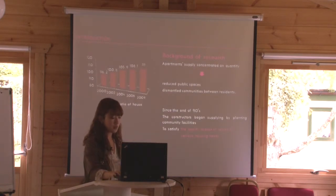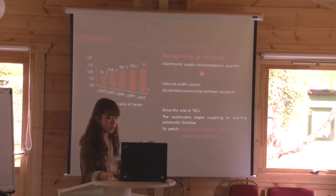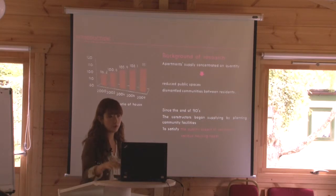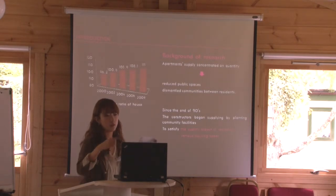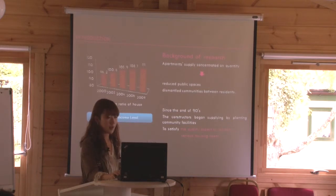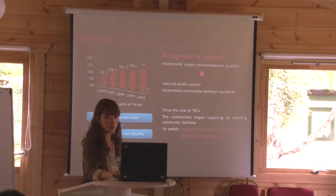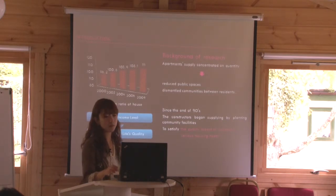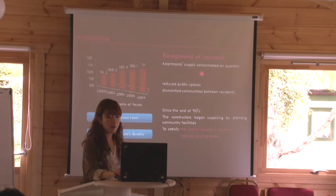As you can see, this graph shows the diffusion ratio of houses. In 2002, the diffusion ratio of houses was already over 100%. Apartments supplied concentrated on quantity, and as a result, it reduced public spaces and dismantled communities between residents. At the same time, people's income level elevated and life quality improved, and naturally people started to be interested in the quality of residence. Since the end of the 90s, constructors began supplying and planning community facilities to satisfy the quality aspects of residency and various housing needs.